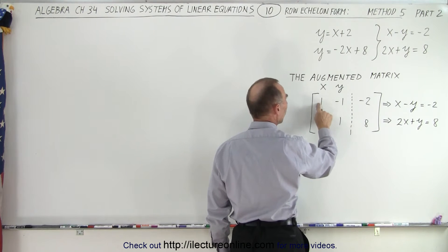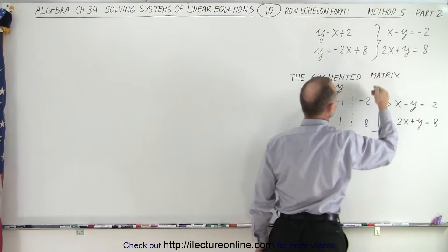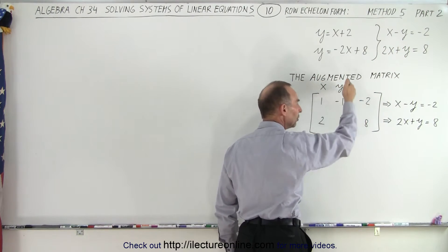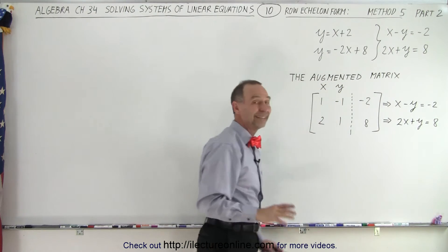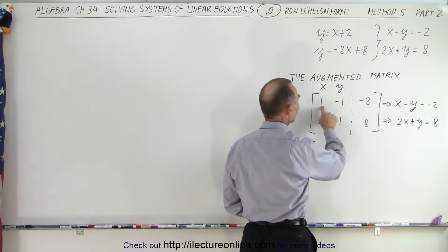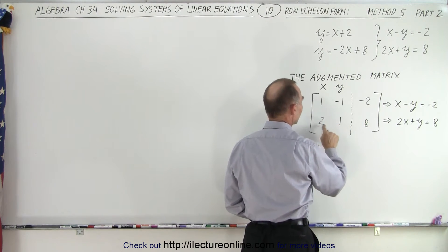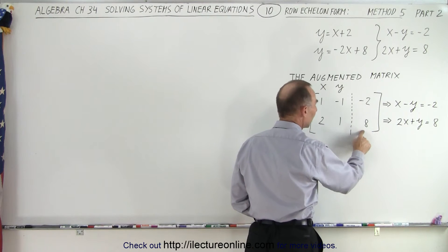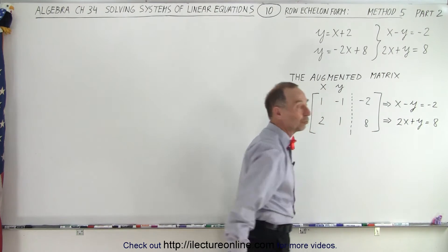Here are the coefficients of x and y: 1 and -1, 2 and 1. Behind the dotted line we place the two constants -2 and 8. This literally represents the two equations in this format: 1x - y = -2 and 2x + y = 8. So you can see that this is exactly the same as the two equations.